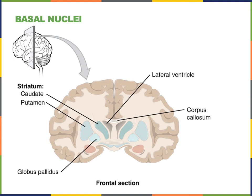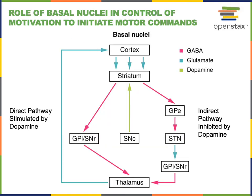Here we can see the network that controls motivation to initiate motor commands. The excitatory connections, where glutamate is the neurotransmitter, are shown in blue, whereas the inhibitory connections, where GABA is the neurotransmitter, are shown in red. The cerebral cortex motor neurons project excitatory connections into the striatum to stimulate neurons in the caudate and putamen.